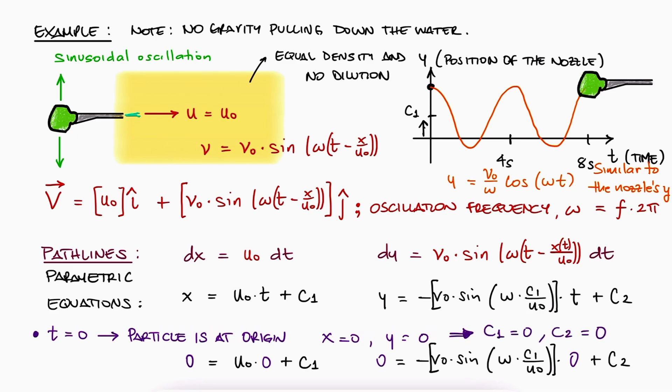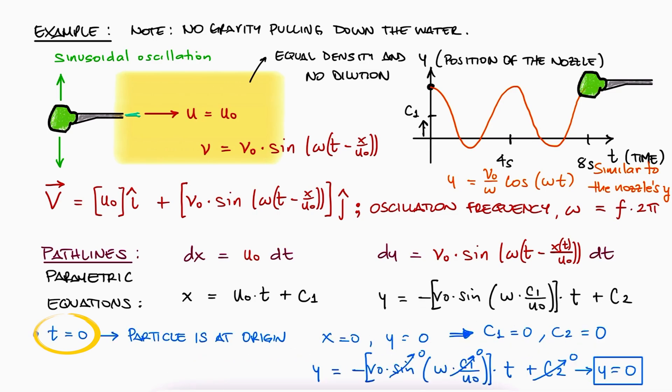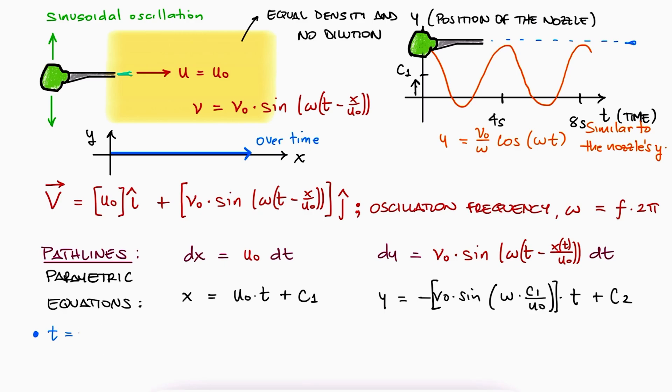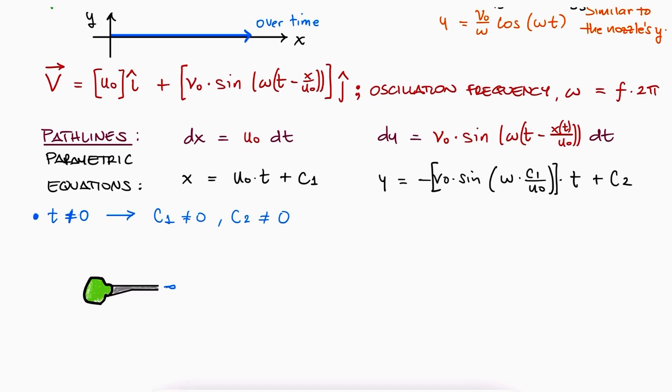This means that the pathline for the particle that came out first is described by y equal to zero, and x equals u naught times t. This is just a straight line going right, which makes sense, because the nozzle was shooting the water towards the right, and at time zero, the nozzle was not moving up or down, so the drop is just gonna keep moving right. If you go through the same process for a time other than zero, you'll get an actual value other than zero for c2 and c1. This means that the drop is starting at another location, which again makes sense.